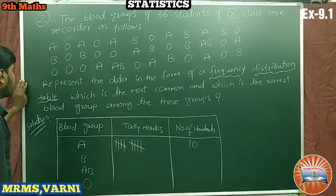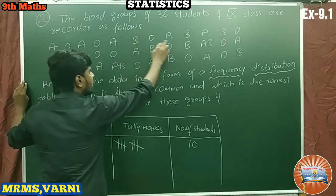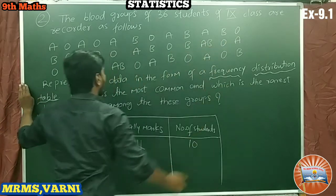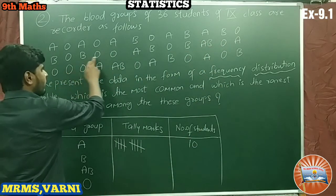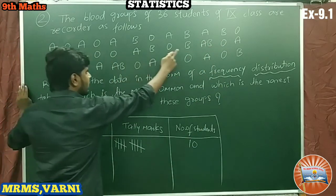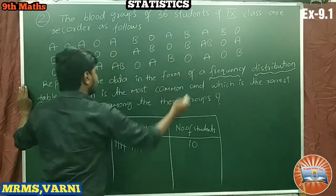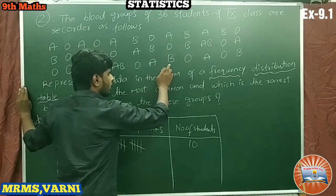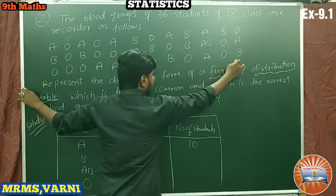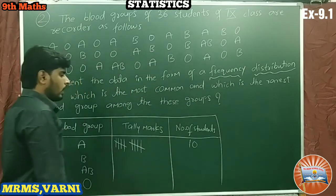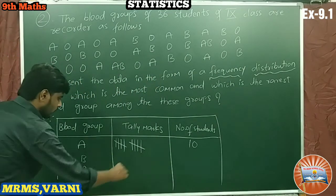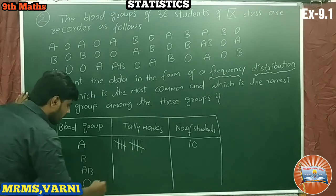Next, coming to blood group B: 1, 2, 3, 4, 5, 6, 7, 8, and 9. So total 9 members are having blood group B.